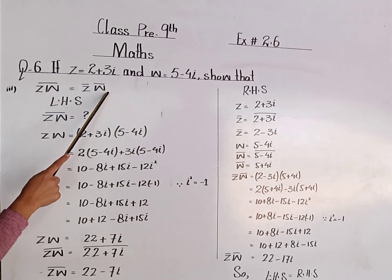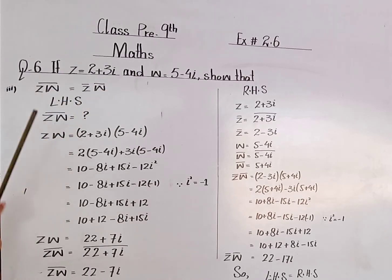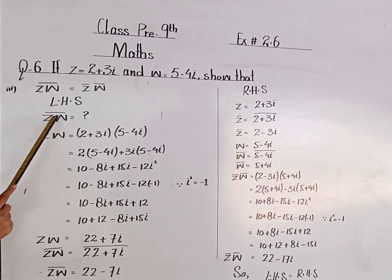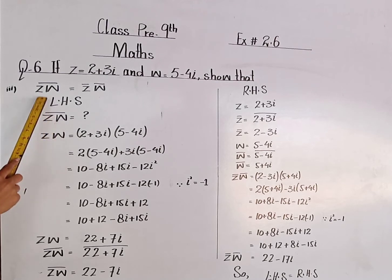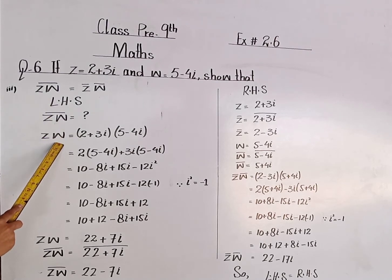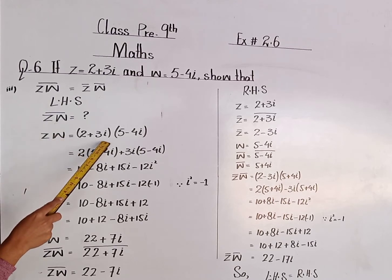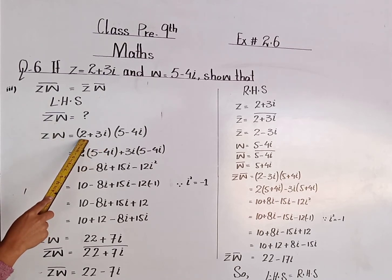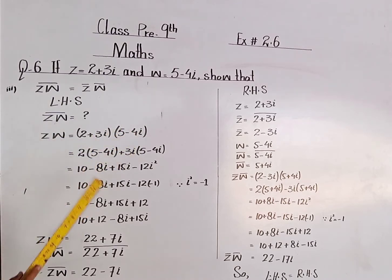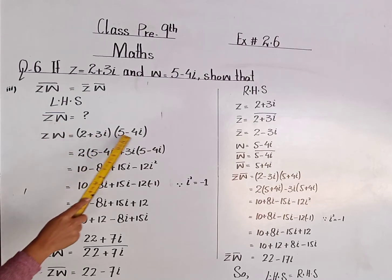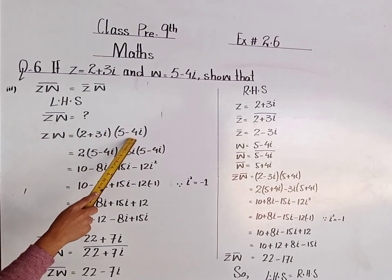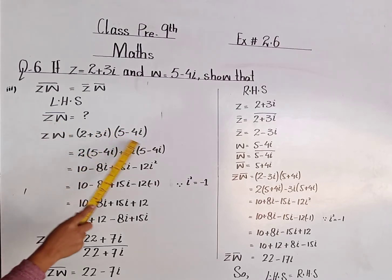First of all we will simplify the left hand side. Left hand side is conjugate of z into w. So first we find out the product of z and w, and then we will take its conjugate. So z multiplied by w is equal to — put the values of z and w — 2 plus 3 iota into 5 minus 4 iota. First we multiply 2 by the factor 5 minus 4 iota, then 3 iota by 5 minus 4 iota.